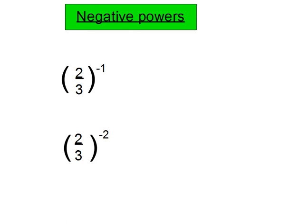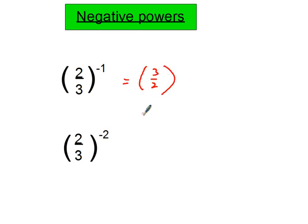Let's move on to negative powers. I'm going to begin by looking at fractions because it helps explain what's going on. If you see a negative power, that means to change it to a positive power you need to find the reciprocal. With a fraction that means we flip the fraction upside down, and instead of a negative power we now have a positive power. So this becomes 3 over 2 to the power of 1, which is just 3 over 2.